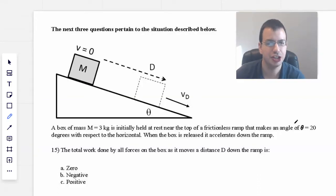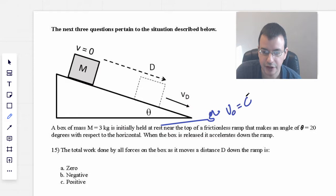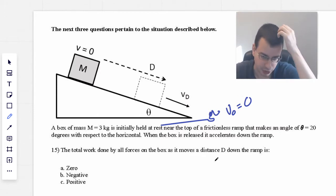The next three questions pertain to the situation described below. A box of mass 3 kilograms is initially held at rest near the top of a frictionless ramp, so initially held at rest, that's going to imply that the initial velocity is 0. Makes an angle of 20 degrees with respect to the horizontal. When the box is released, it accelerates down the ramp.